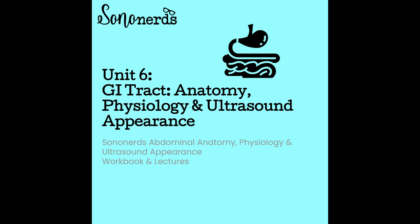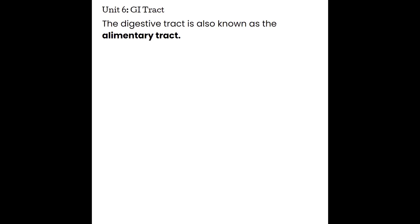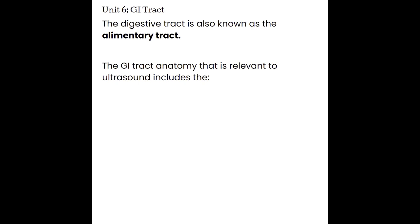The digestive tract is also known as the alimentary tract, and it is one big tube that starts at the mouth and ends at the anus. It's about 8 meters in length, and the part we consider to be specifically the gastrointestinal tract, or GI tract, starts below the diaphragm. The GI tract anatomy relevant to ultrasound includes the esophagus, the stomach, small intestine, and the large intestine.